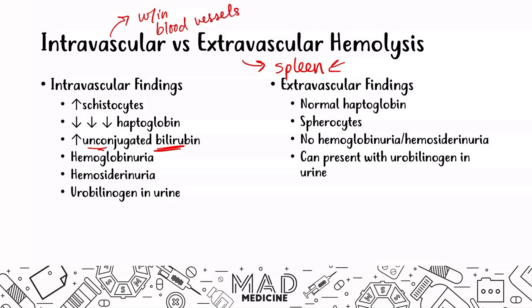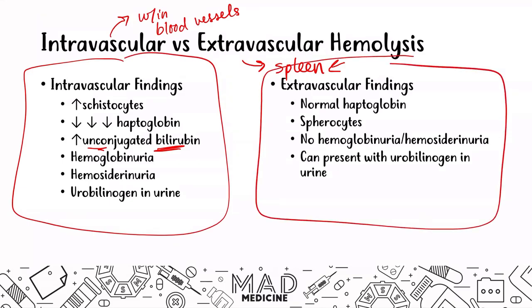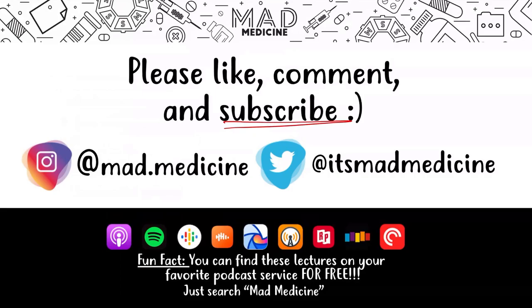This was a lot of material. Mainly, just understand that the reticulocyte count will be increased in hemolytic anemias compared to non-hemolytic anemias. Don't forget the reticulocyte correction formula, and don't forget the findings for intravascular and extravascular hemolysis — we will go over them deeper in each of those videos. Thank you so much for watching. Follow us on Instagram at mad.medicine, on Twitter at it's madmedicine, and you can find these lectures on your favorite podcast service for free — just search madmedicine.